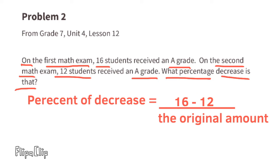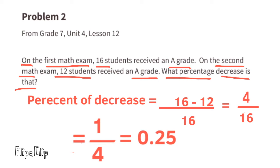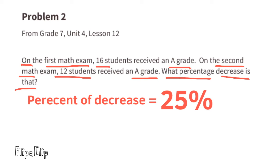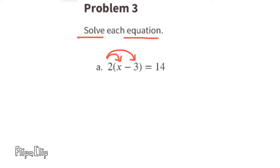16 minus 12 gives us the difference, and the original amount was 16. That gives us 4 over 16, which is equivalent to one-fourth. One-fourth can be written as 0.25, which is of course 25%. The percent of decrease was 25%. Problem number three: solve each equation.